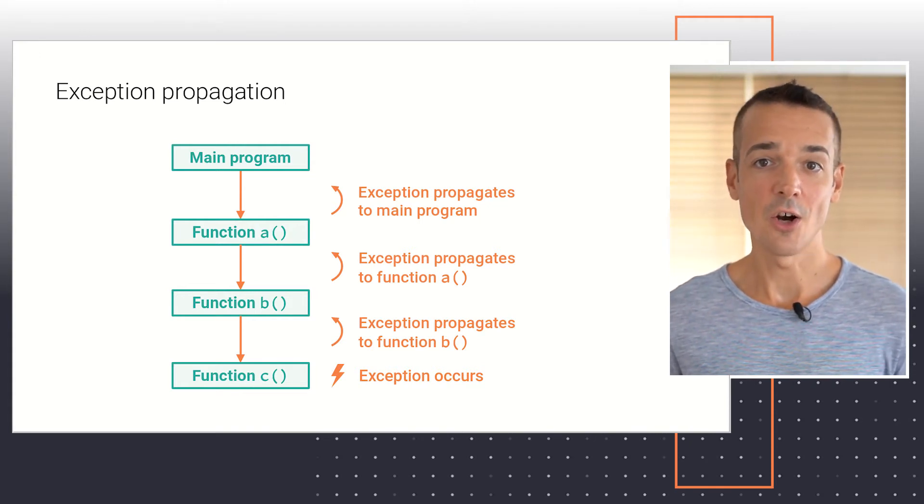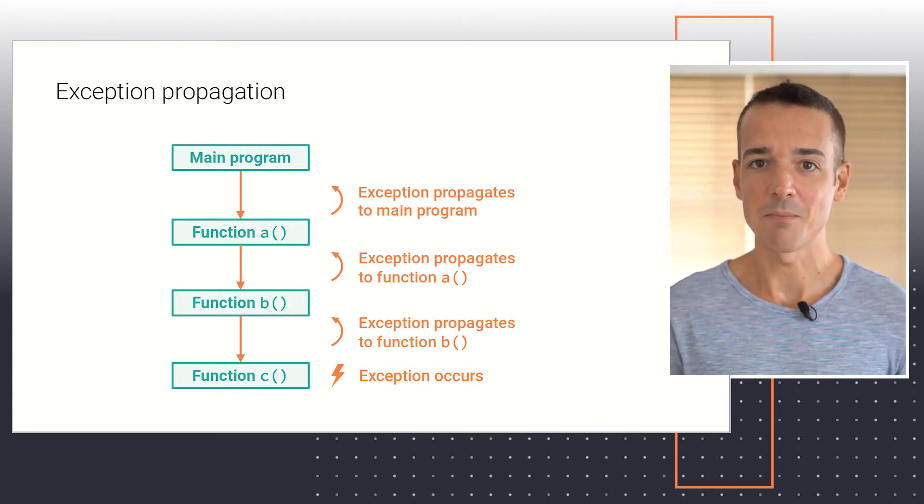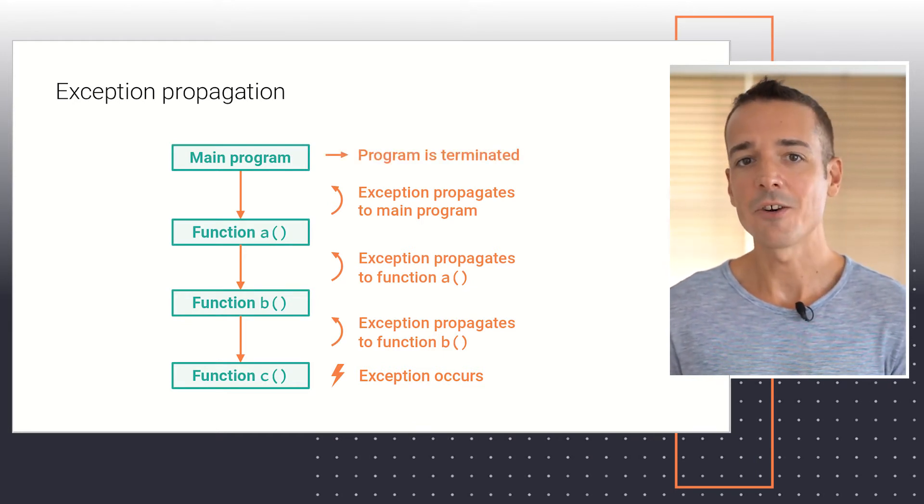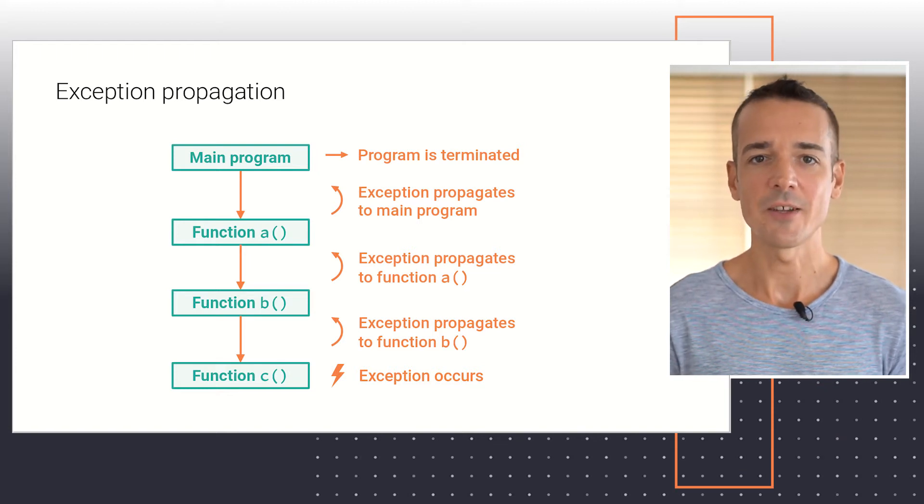If we fail to include the call to function A within a try-except block at this point, Python will terminate the execution of our program with an error message containing information about the exception.